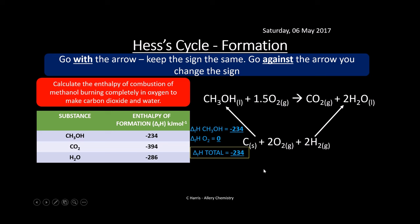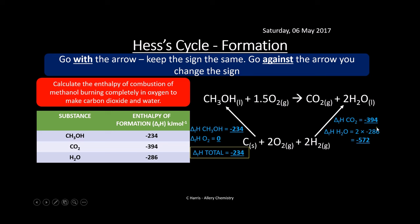On the other side of the cycle: the enthalpy of formation of carbon dioxide is minus 394. The enthalpy of formation of water — because we've got two of them — is 2 × minus 286, which is minus 572. Add all that up and we get a total enthalpy of formation of minus 966 going up on that side.